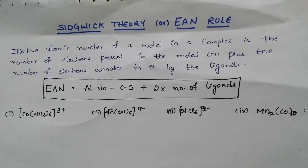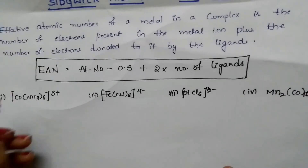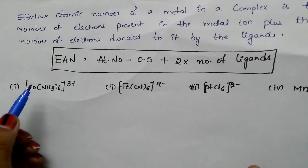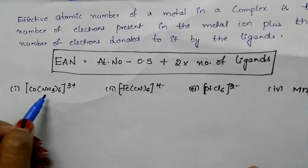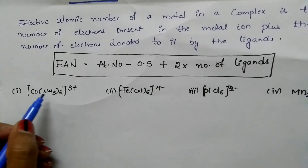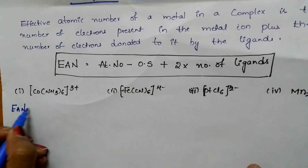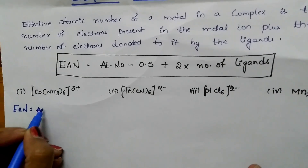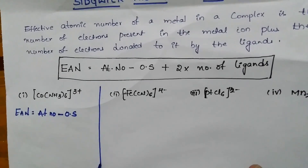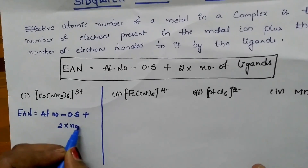Consider the complex ion Co(NH3)6³⁺. If the EAN of cobalt equals the nearest noble gas element's atomic number, then this complex ion is most stable. Let us find the EAN. EAN is equal to: atomic number minus oxidation state, plus 2 times the number of ligands.